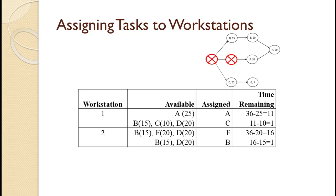Selecting F leaves 36 minus 20 equals 16 seconds. With F completed, B and D are available to be assigned. Note that H cannot be assigned yet because E has not been completed. While both B and D are available, there is only enough time to do B, so B is assigned. That leaves 16 minus 15 equals 1 second, and we move to the next workstation.